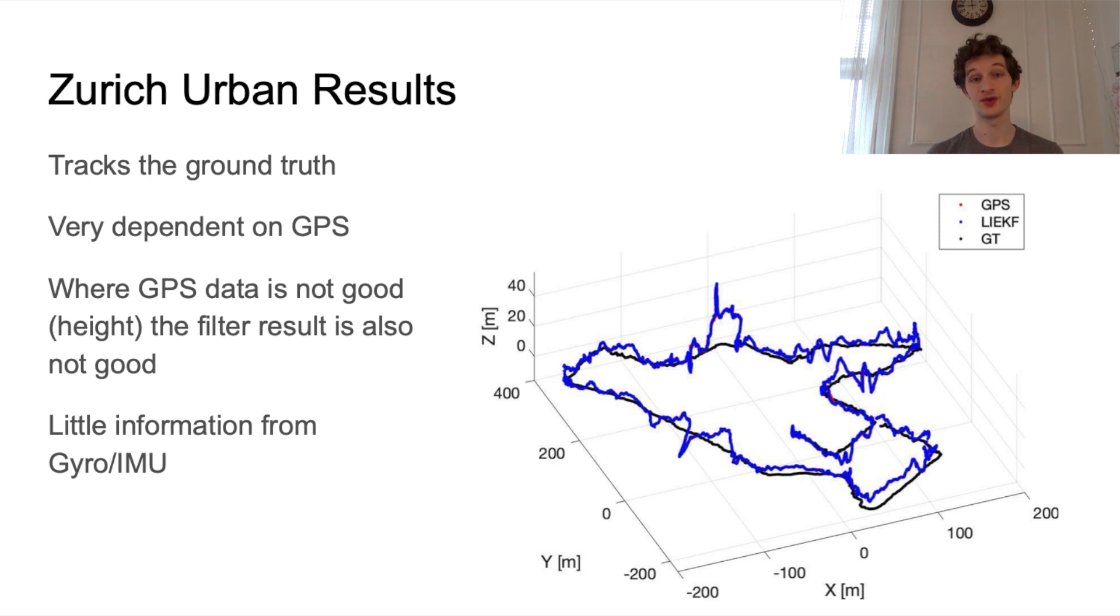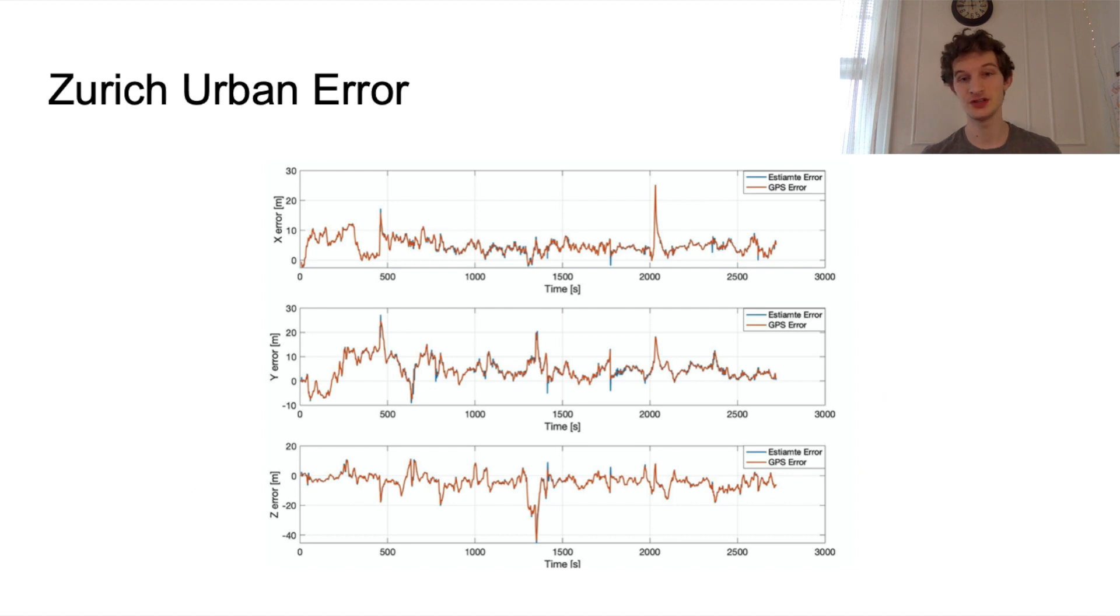The dataset also came with the ground truth, and in comparing the results of the filter to the ground truth, we can see that the filter essentially only tracks the GPS data. The IMU data is too noisy to be useful even though we're using bias correction. This means that in places where the GPS data is noisy, our state estimation is equally noisy. There is not a significant difference between the EKF and invariant EKF performance in this case.